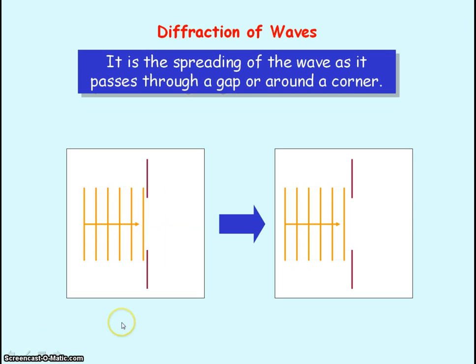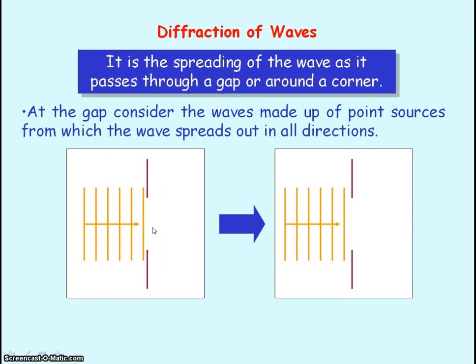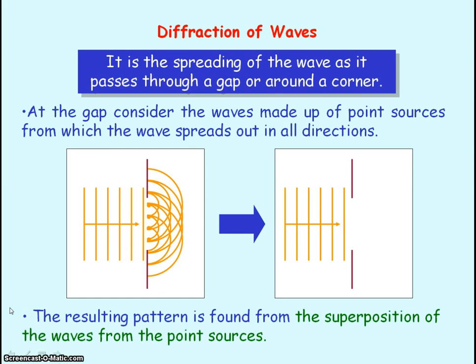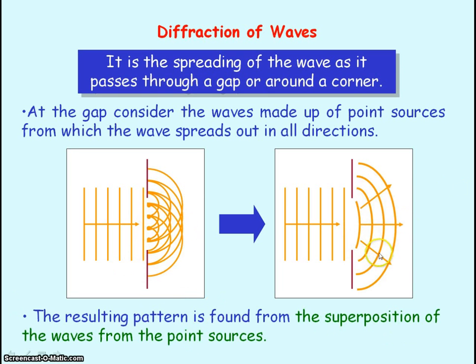The reason why the waves spread as they pass through a gap is because we can consider that at the gap the waves act as point sources. From each point source the waves spread out in all directions, and we ignore the wave spreading out in the backward direction and only focus in the forward direction. Here we consider the waves made up of four point sources, and from each point source the wave is spreading out in all directions. The resulting pattern is found from the superposition — the addition — of all these waves, and so we get this spreading out, this curved effect.